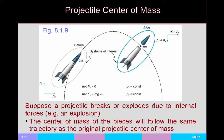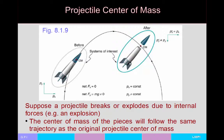What happens if a projectile breaks or explodes due to internal forces? For example, here's a rocket moving in a parabolic arc — the center of mass follows this trajectory. If the rocket remains whole, the whole rocket follows this path. In a staged rocket, the bottom stage is blasted off when its fuel is expended, and the top continues on. But the center of mass of all the pieces stays on the original parabolic trajectory — so the range of the rocket as a whole equals the range of the center of mass.